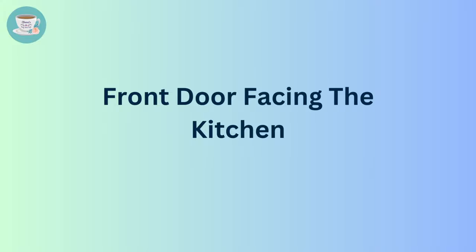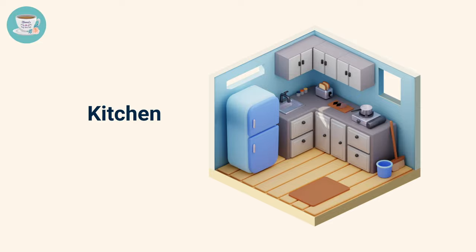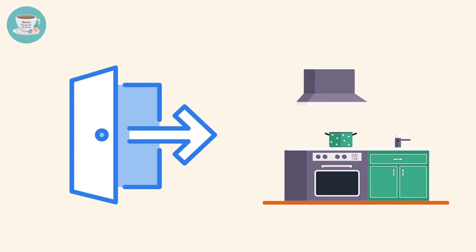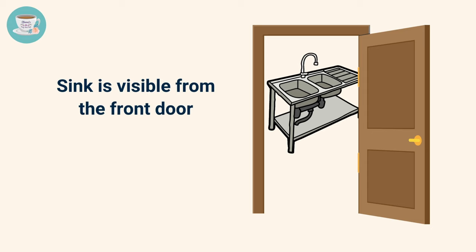Front door facing the kitchen. In feng shui, the location and layout of the kitchen can have a significant impact on one's financial well-being. For example, if the front door of a home faces directly into the kitchen, it can negatively affect the financial fortune of people living there, especially if the kitchen sink is directly visible from the front door. This type of arrangement can lead to financial losses, as water represents wealth in feng shui.